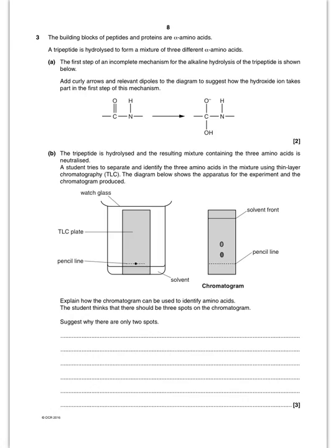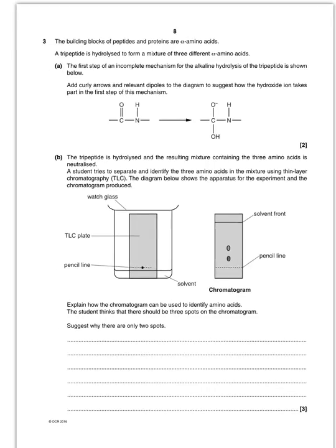Right, so moving on to question three. I've got to add curly arrows to this first part here for the attack of hydroxide. So let's do that. So here comes hydroxide OH-. Let's put the lone pair on it. That is obviously going to attack the delta plus carbon there like so. And then this bond is going to go to the oxygen there.